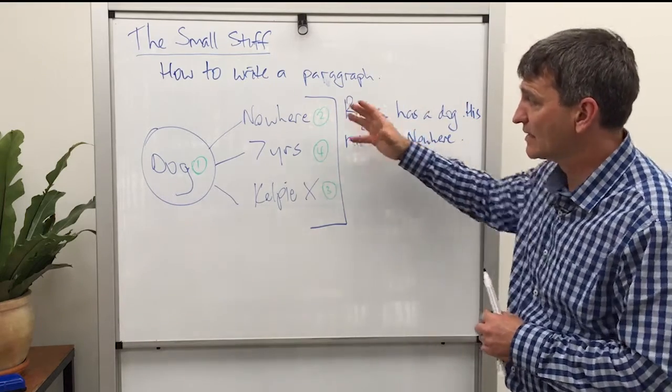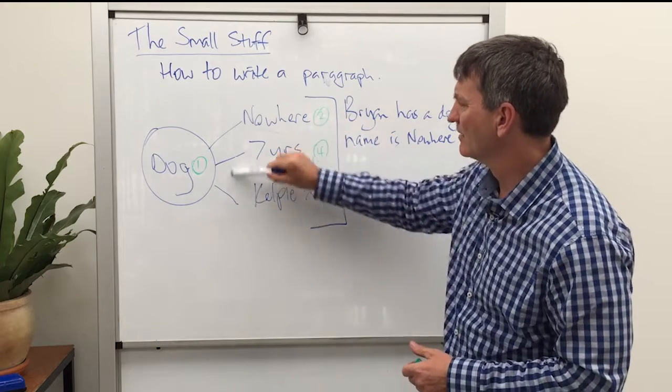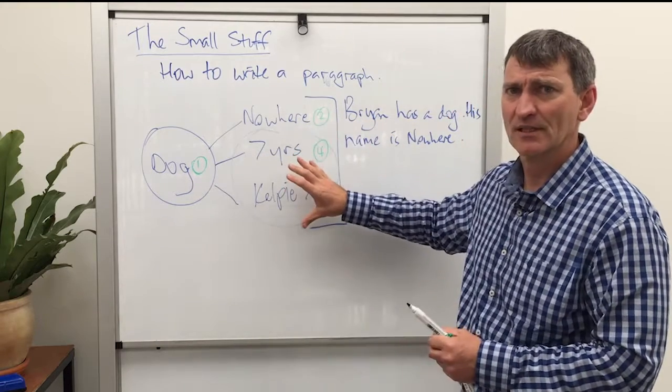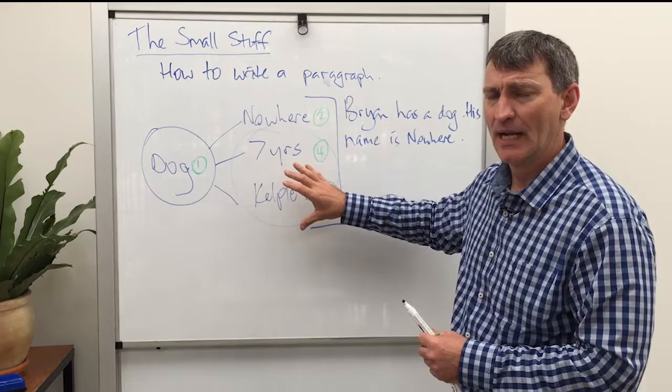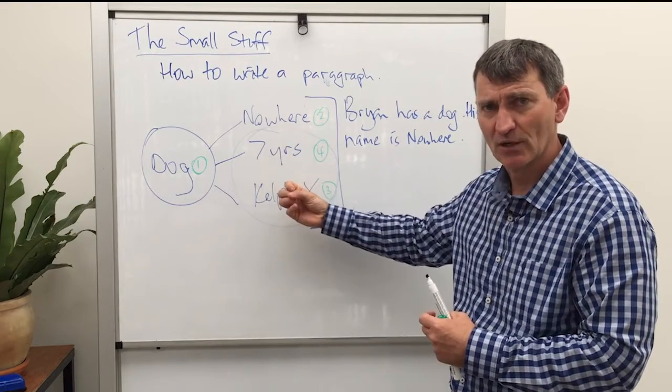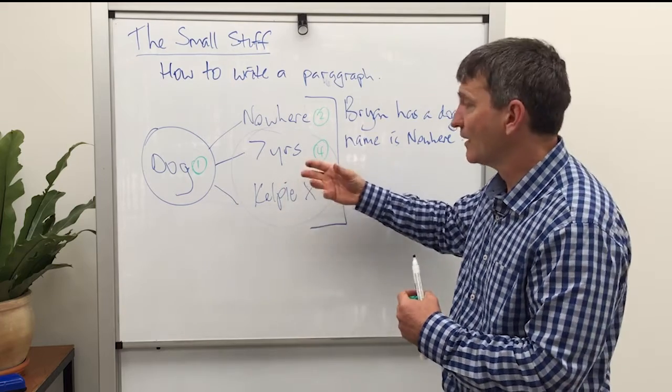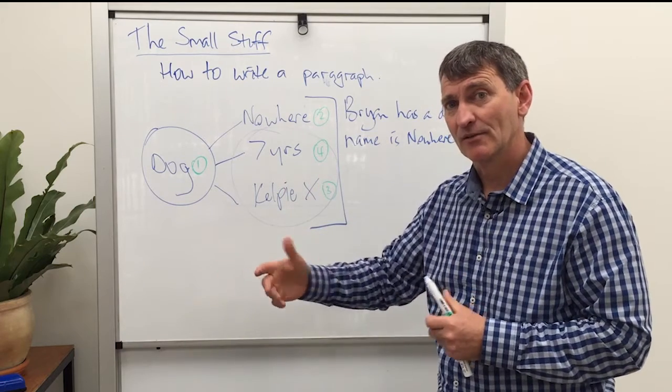Once we get to this stage, it's possible for the learner to say, well, this can all actually be combined. This could be one sentence instead of two. And that helps them to make conscious decisions about the relationship between the ideas and once we have that nailed down, then they are able to better communicate those ideas.